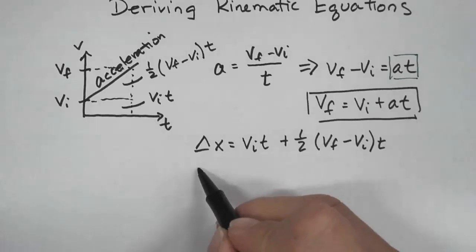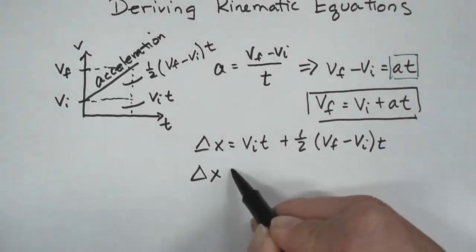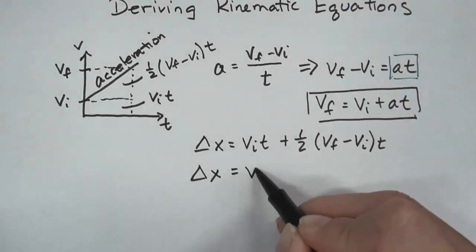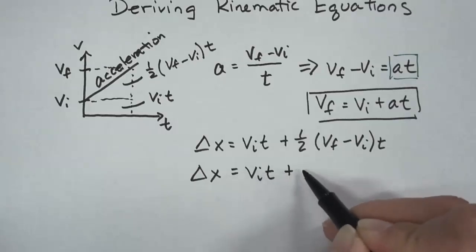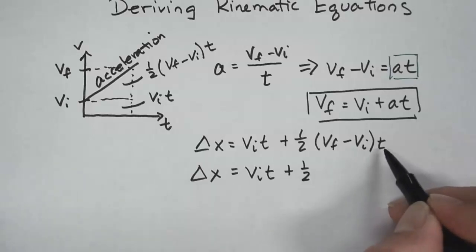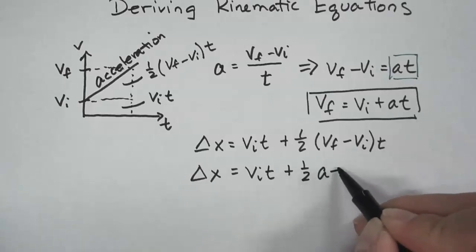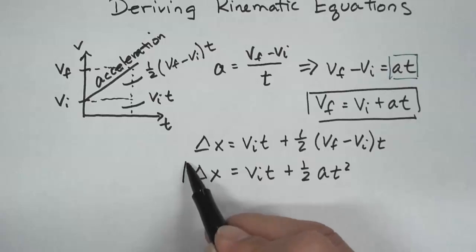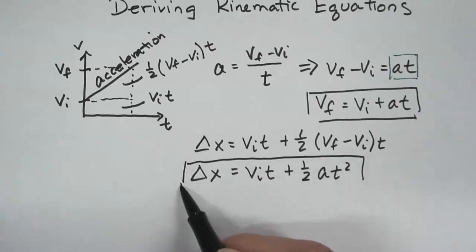So what I can do is I can do a little substitution. Delta x equals vi t plus 1/2, and this is just going to be at, and there's another t, so it's squared. So it's just going to be at squared. So this is my second kinematic equation.